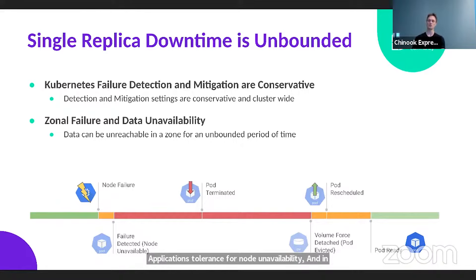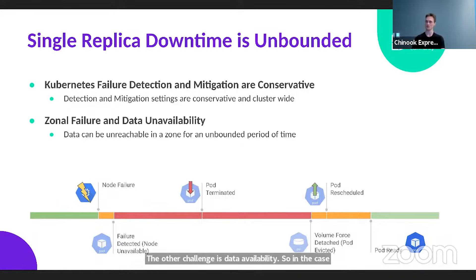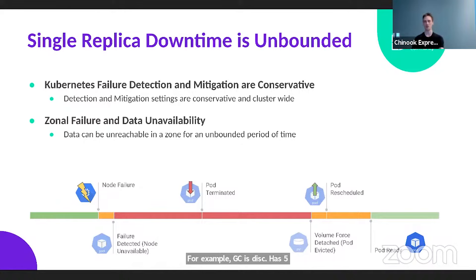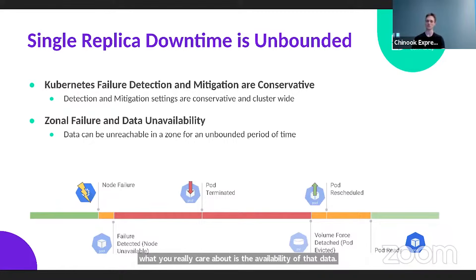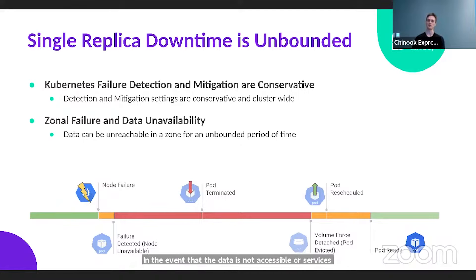The other challenge is data availability. In the case of a zone failure, your data may be durable — for example, GCE's persistent disk has five nines of durability — but what you really care about is the availability of that data. In the event that data is not accessible or services are unavailable in a particular zone, your data is effectively lost for that period of time.